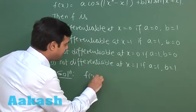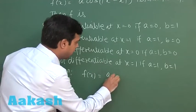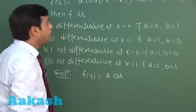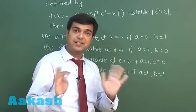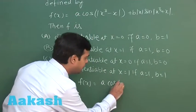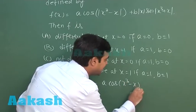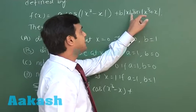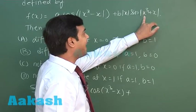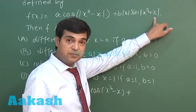The given function f(x) is a·cos|x³-x| + b|x|·sin|x|·(x²+1). Since cos(θ) = cos(-θ), both are the same, so it simplifies to (x³-x) + b|x|·sin|x|·(x²+1).